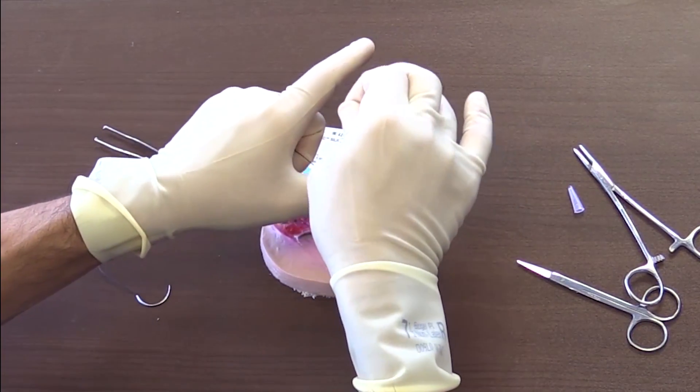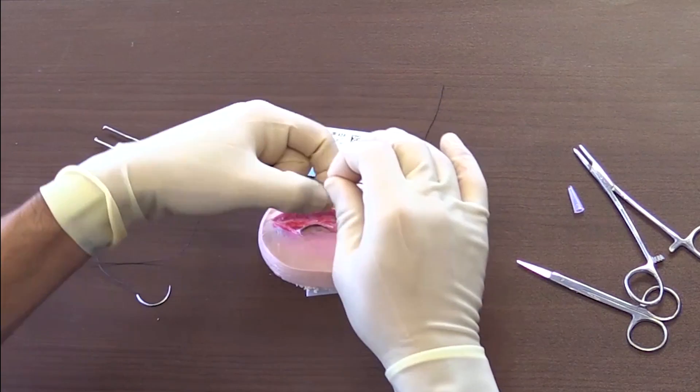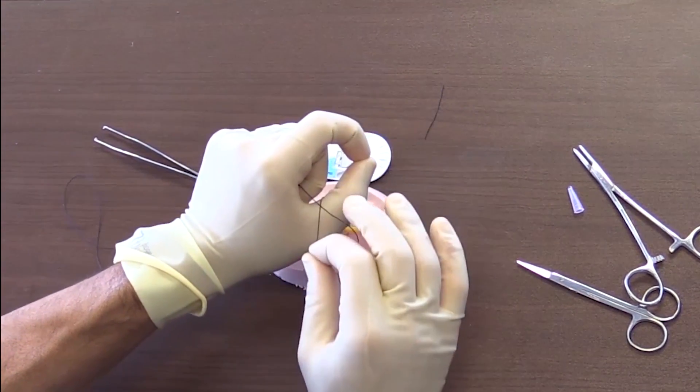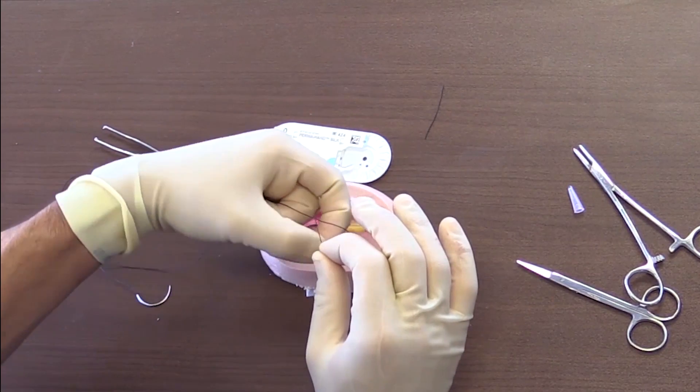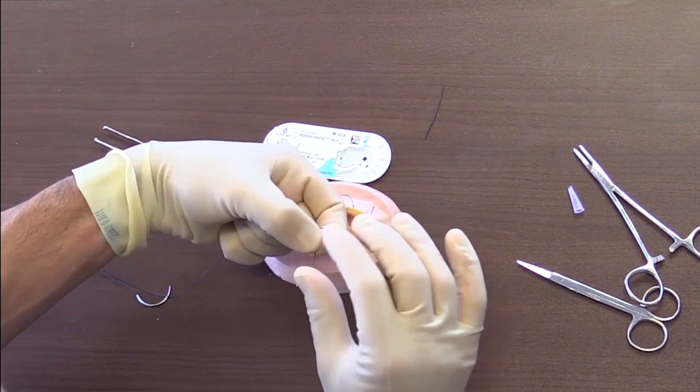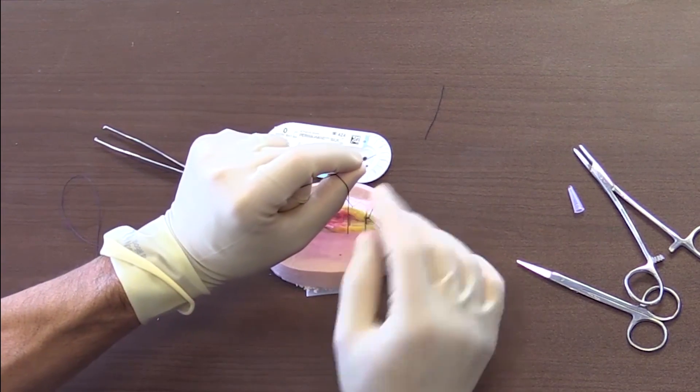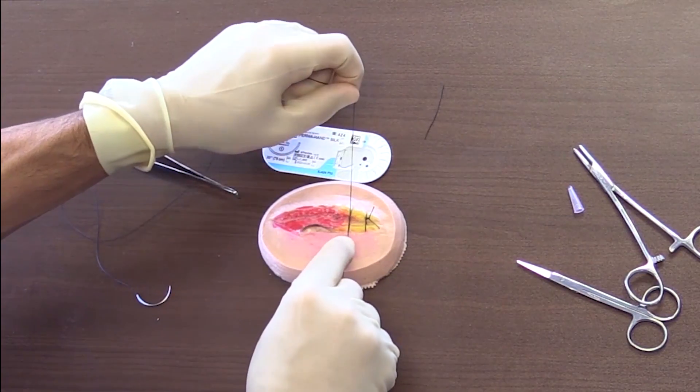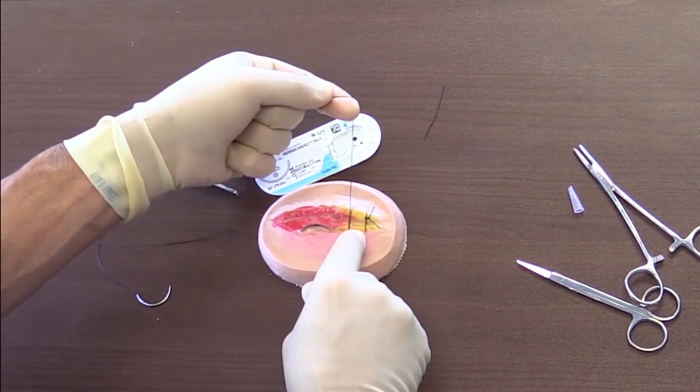And now you see we have this hole, and then I'm going to bring it over and bring it back over. Now grab the suture and go through again. And now notice we want to lay it flat, so we're going to go this way. This time I did not do a double loop, I did a single loop.